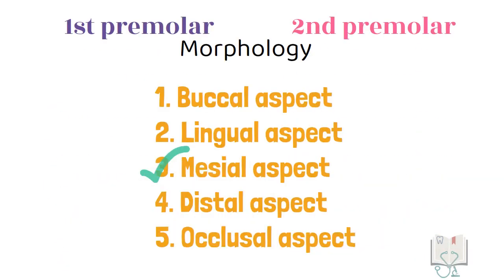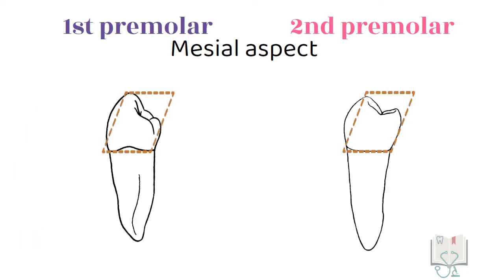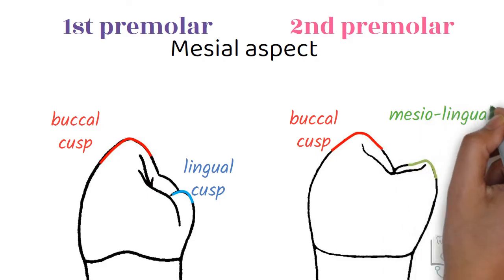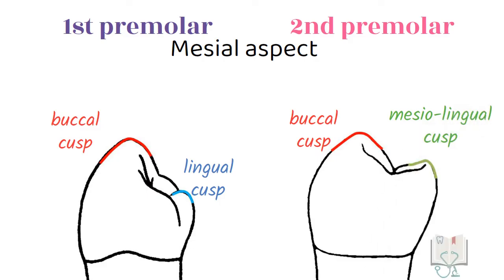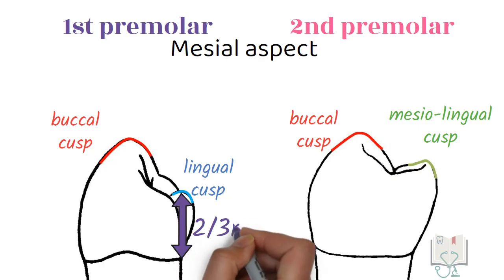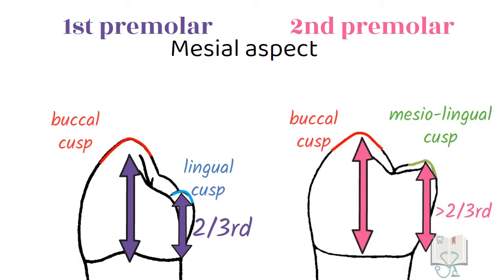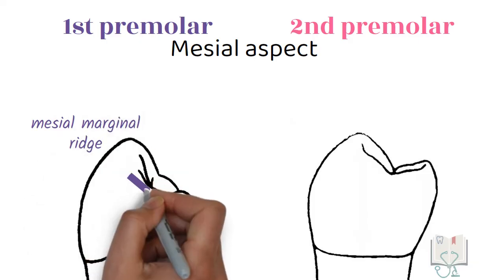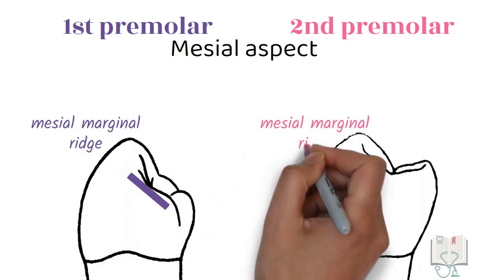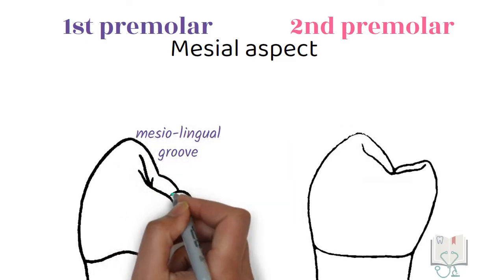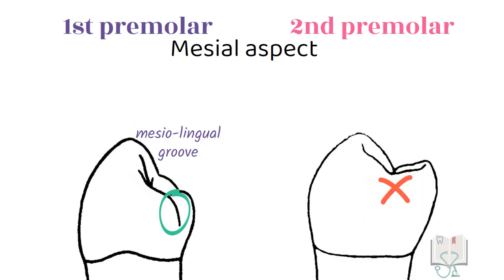Next, the mesial aspect. Both premolars have a rhomboidal outline form. In the first premolar, both the buccal cusp and lingual cusp are visible, whereas in the second premolar, the buccal cusp and only the mesolingual cusp are visible. In the first premolar, the lingual cusp is just two-thirds the height of the buccal cusp, whereas in the second premolar, the mesolingual cusp is smaller than the buccal cusp but not by as much. In the first premolar, the mesial marginal ridge is slanting, whereas in the second premolar it is horizontal. The mesolingual groove is visible from this aspect in the first premolar, but in the second premolar no such groove is present.